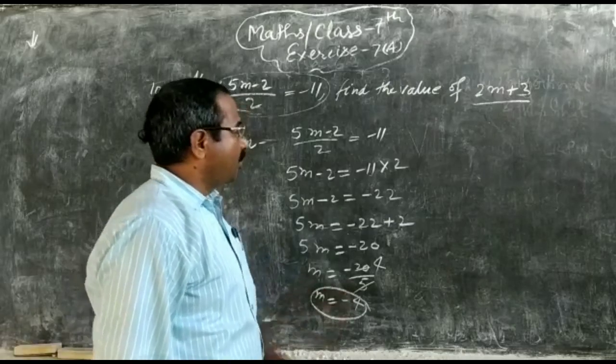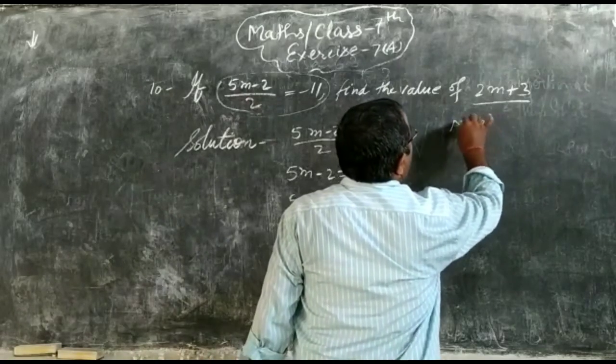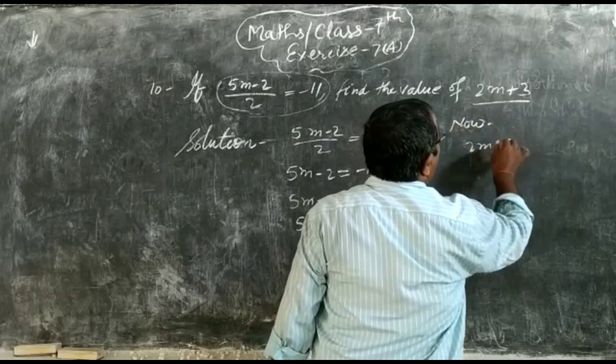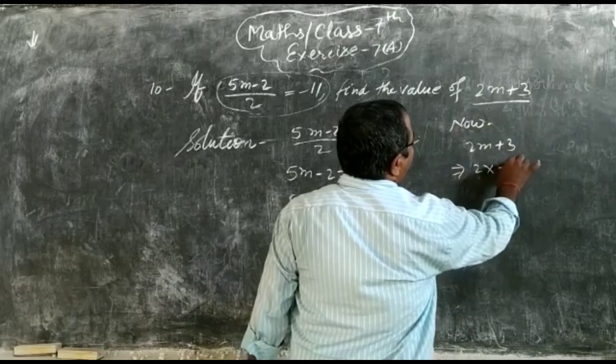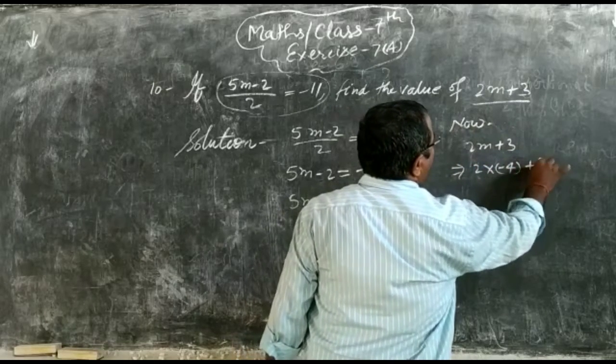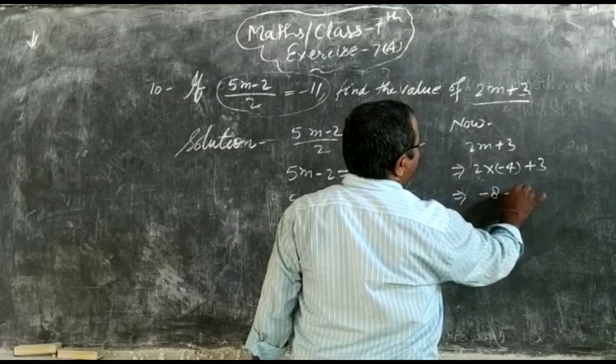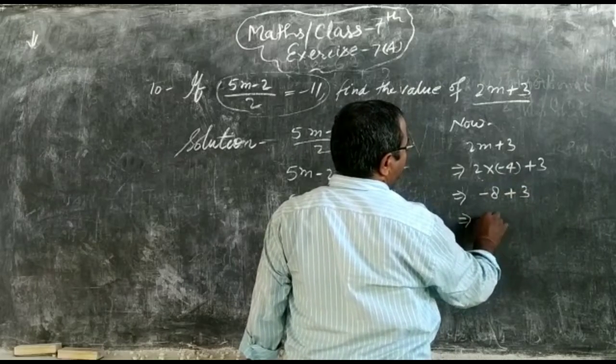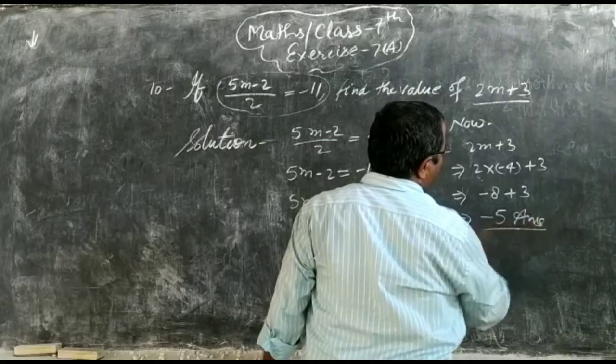Now, 2m plus 3 is equal to 2 into minus 4 plus 3. Then 2 times 4 is 8, minus 8 plus 3. Minus 8 plus 3 is minus 5. This is your answer.